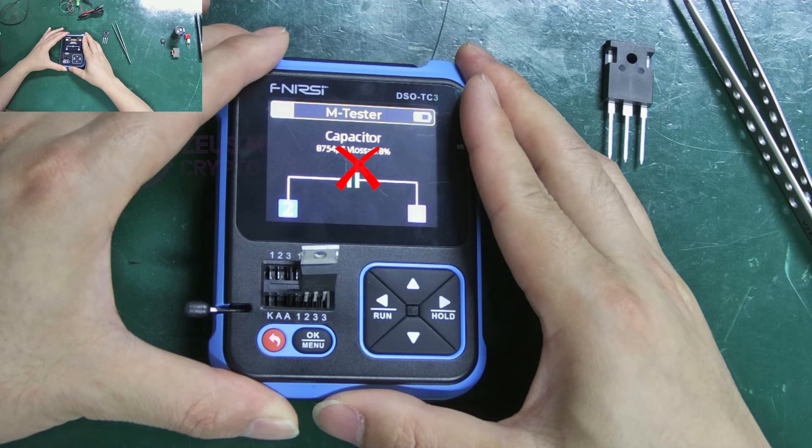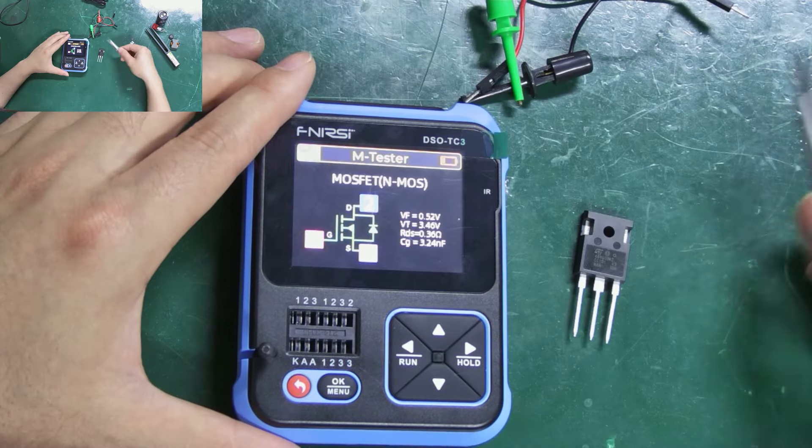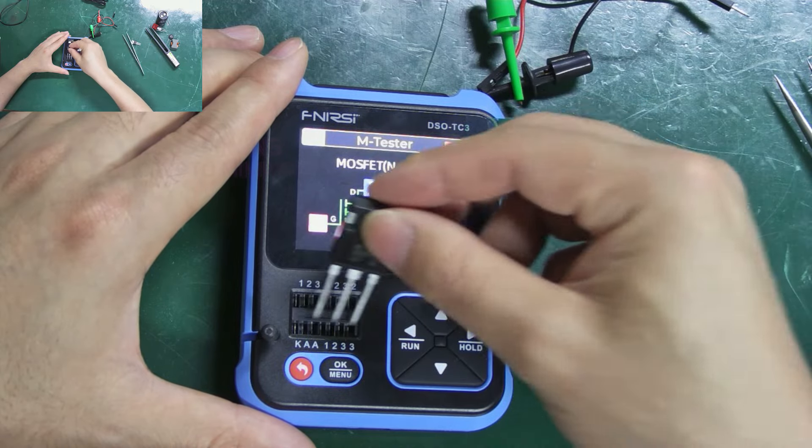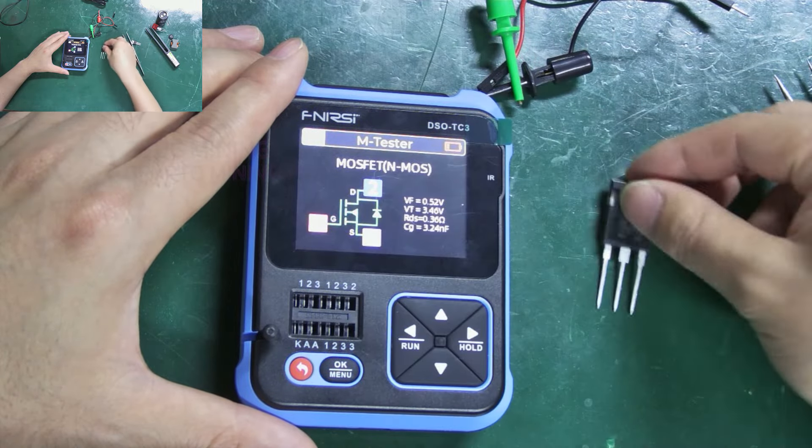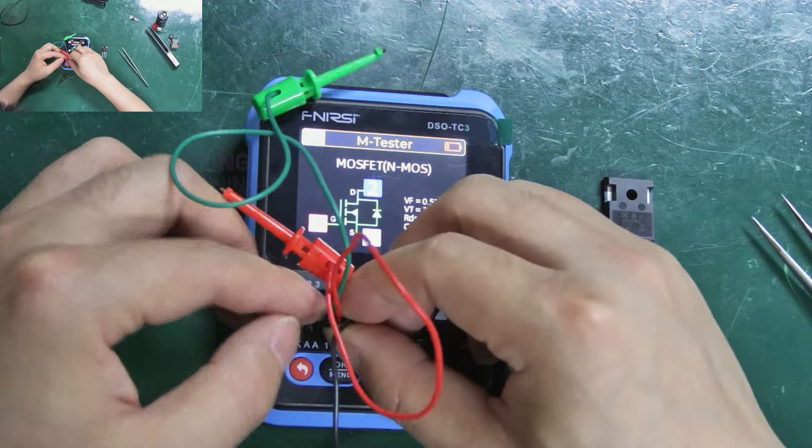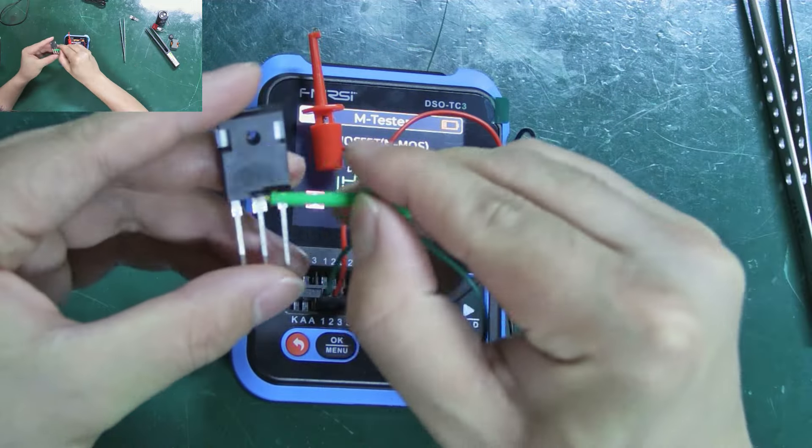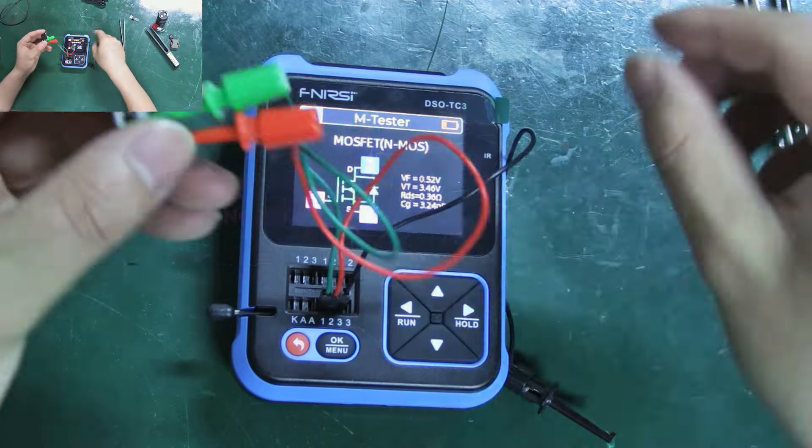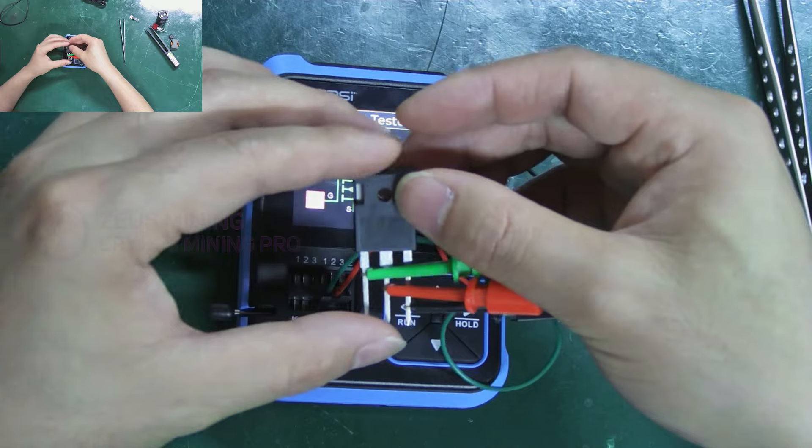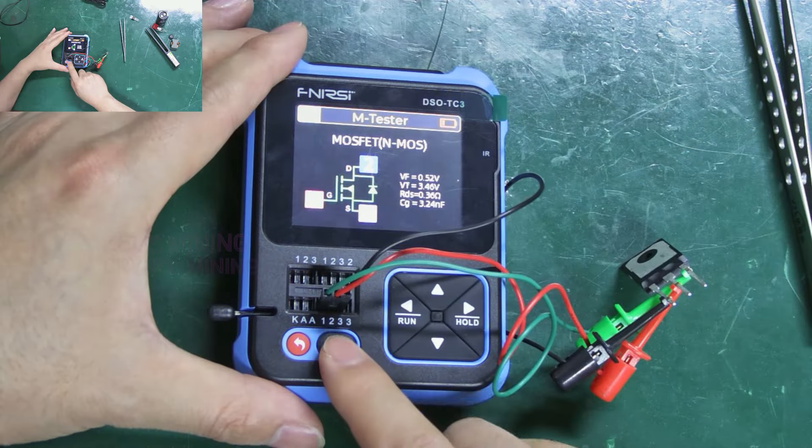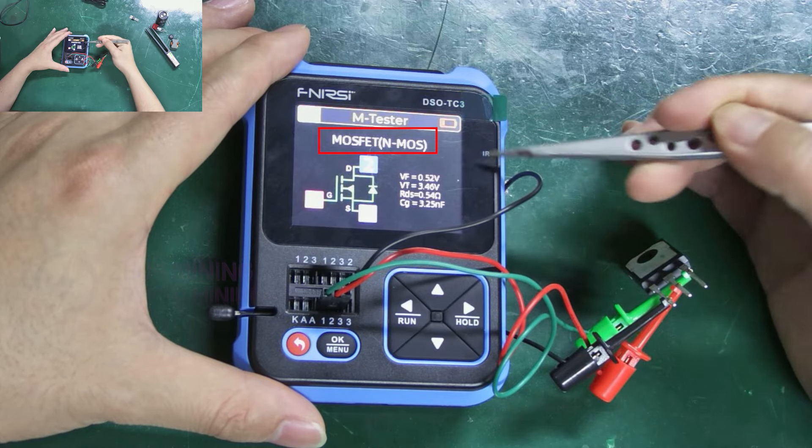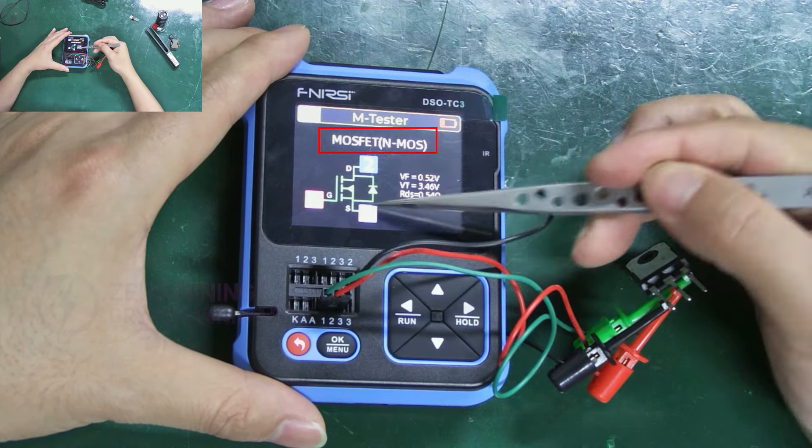Finally, let's measure this larger transistor. As it cannot be inserted into the test holes, we'll also need to use the test hooks. Connect the MOS tube pins in order. The connection method is the same for the opposite side. After measurement, this transistor is confirmed to be an N-channel MOS tube as well.